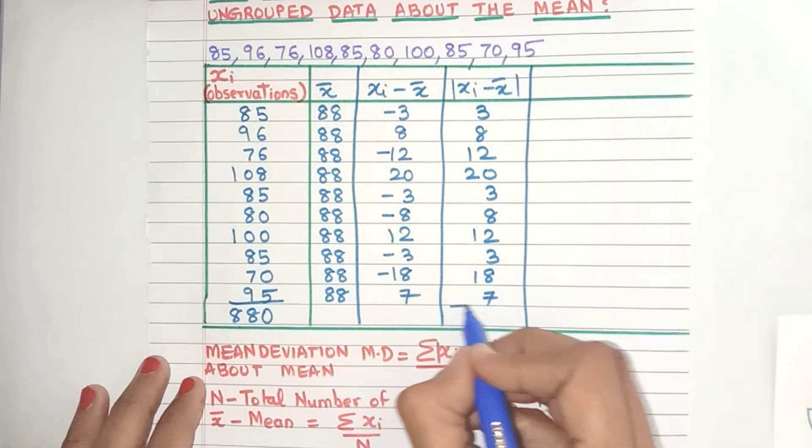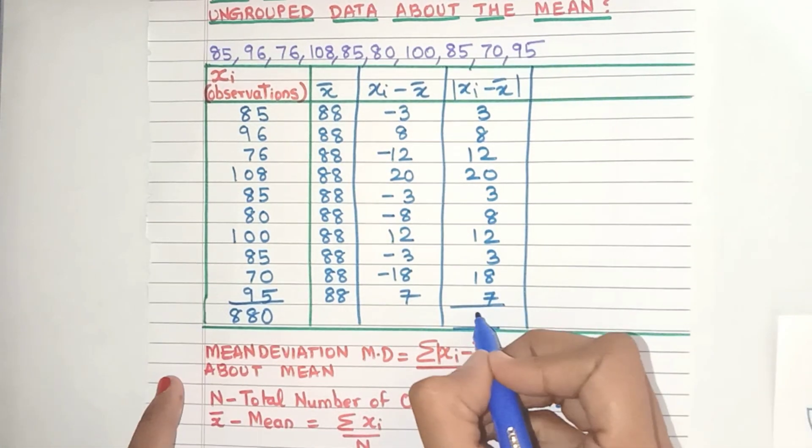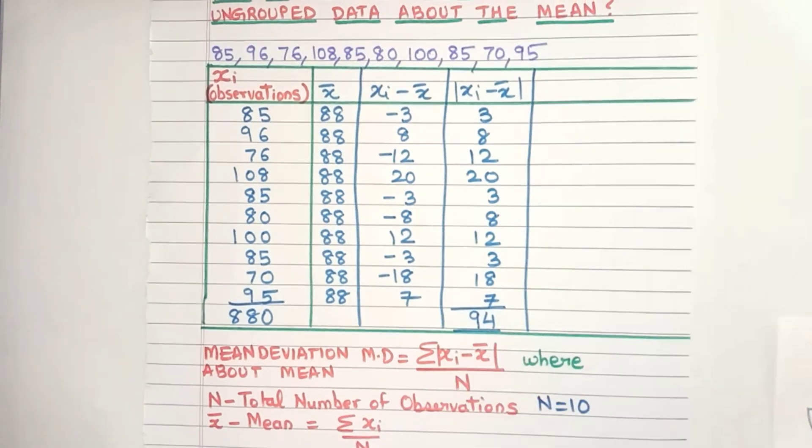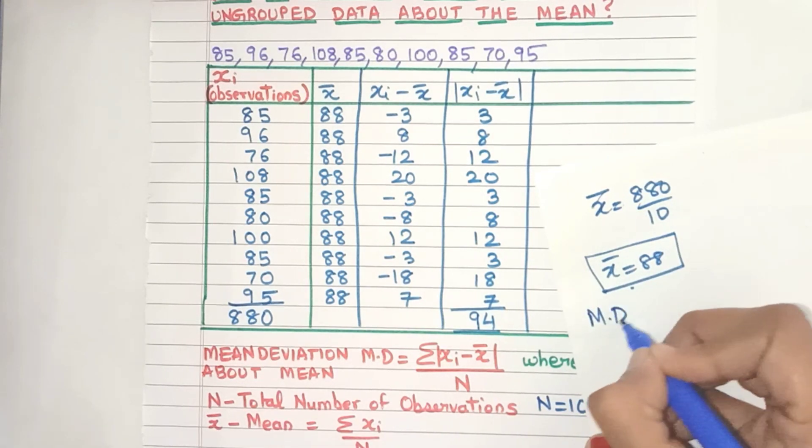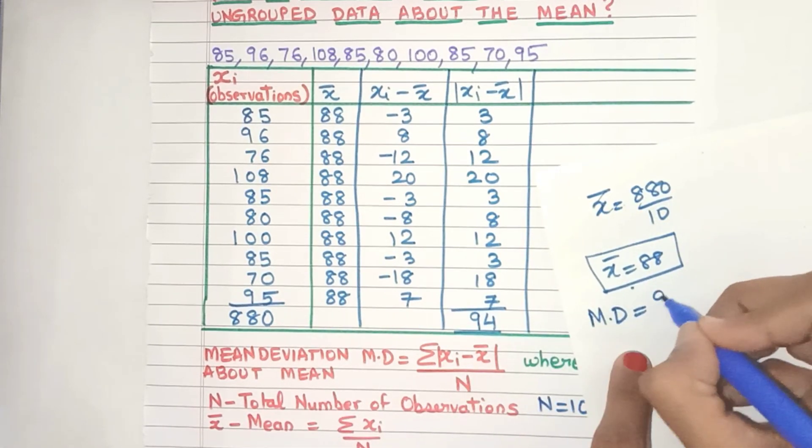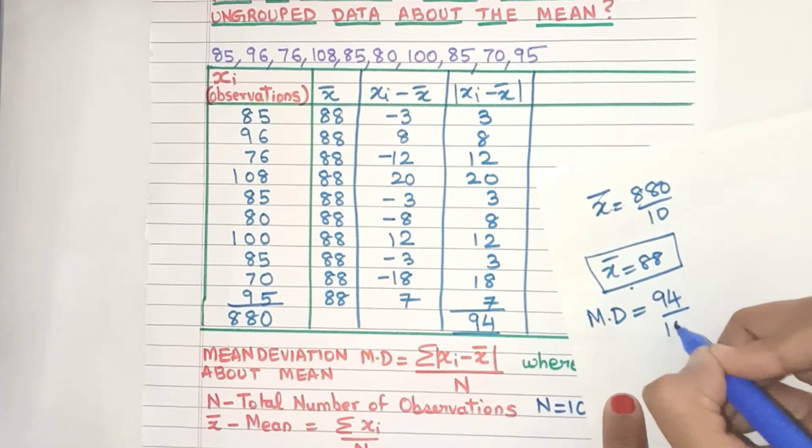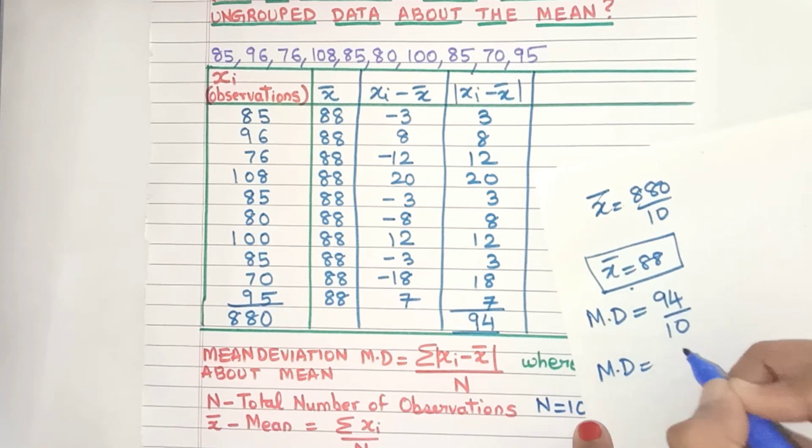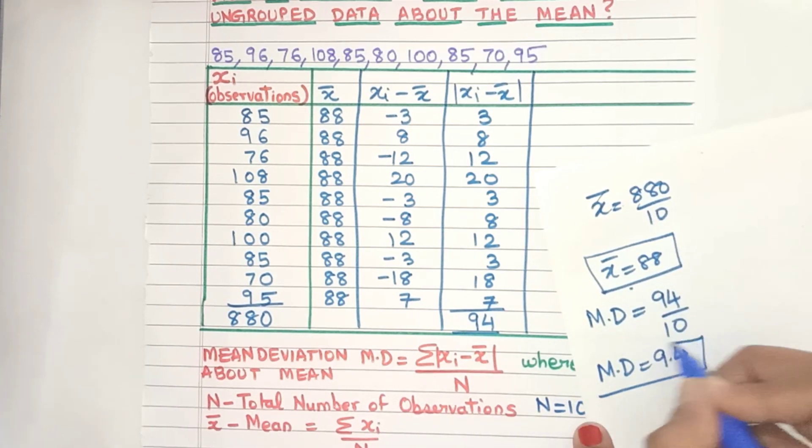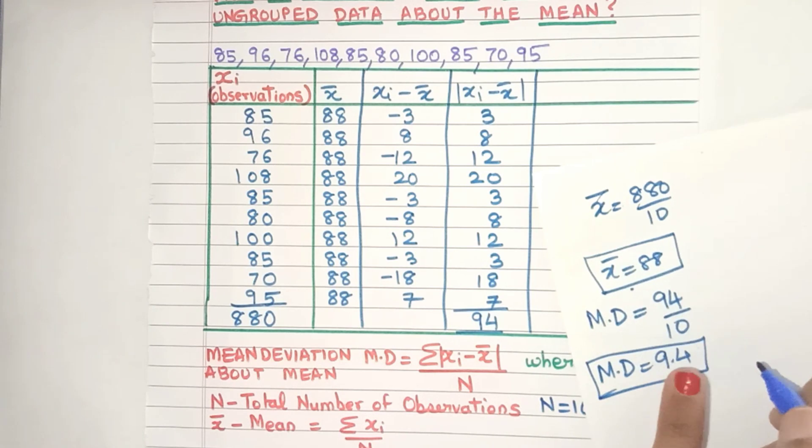So let's add them up. When you add them up you will get 94. I already did the addition. So we have the numerator and the denominator. Let's go ahead and find the mean deviation. Mean deviation is 94 divided by n which is 10. That means mean deviation for this ungrouped data comes out to be 9.4.